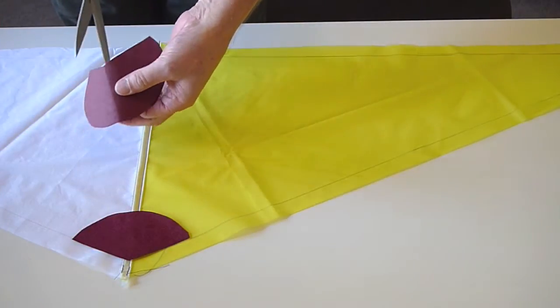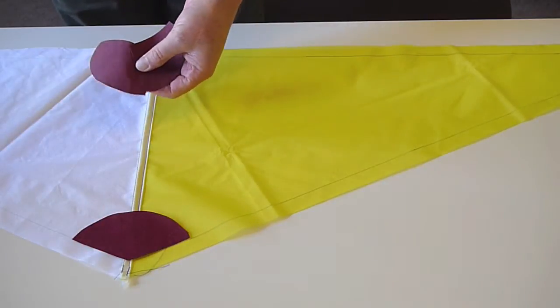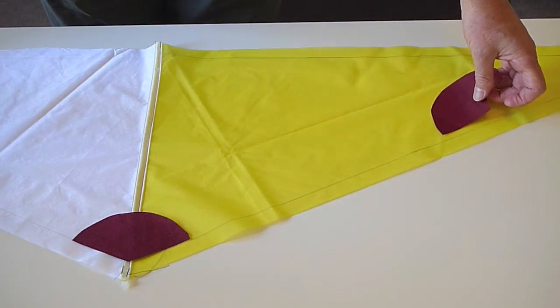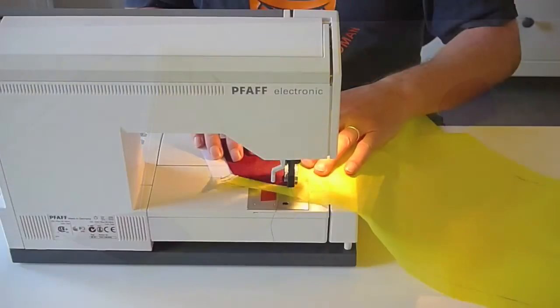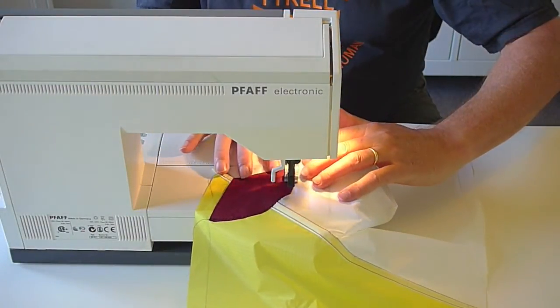This cloth is cordura, used in making backpacks and such, but you can use Dacron sailcloth as well. That is sewn down along the curved edge using a zigzag stitch.